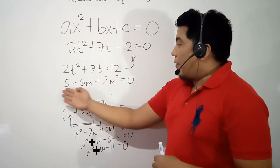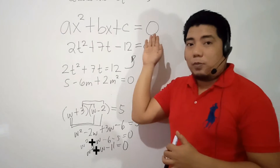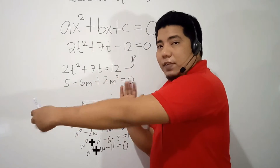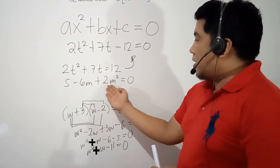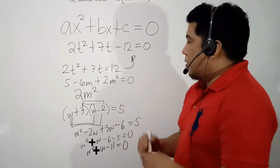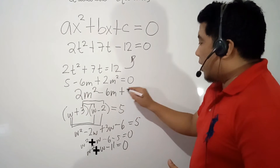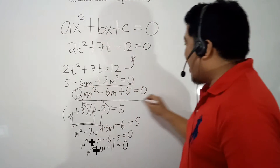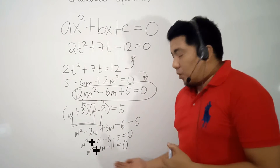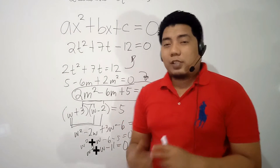Next example: 5 minus 6m plus 2m squared is equal to 0. Since it already equals 0, no transposition is needed. We just rearrange the terms: write the quadratic term first — positive 2m squared — followed by the linear term, negative 6m, then the constant term, positive 5. So the standard form is 2m squared minus 6m plus 5 equals 0.